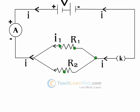Let I1 and I2 be currents flowing through resistors R1 and R2 respectively. Therefore, I = I1 + I2 becomes equation 1. From Ohm's Law: